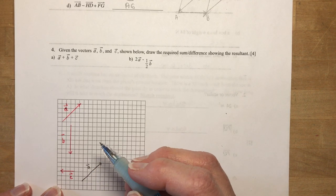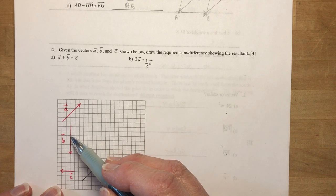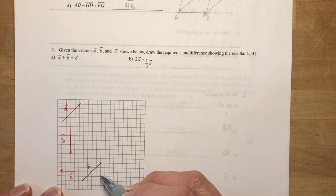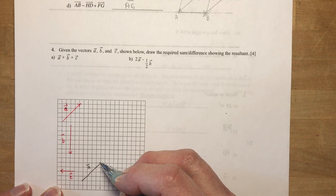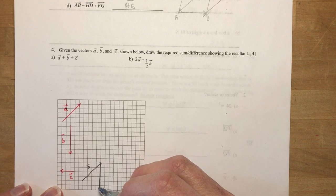Now I need to add vector B which goes down 1, 2, 3, 4, 5, 6. 1, 2, 3, 4, 5, 6. I just made it down here.